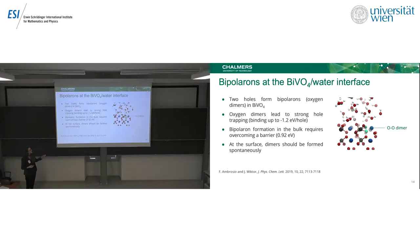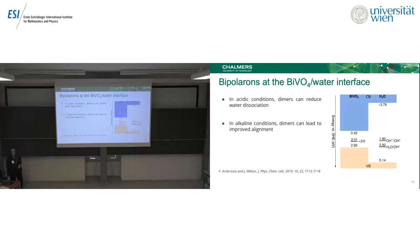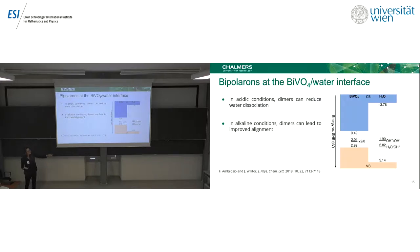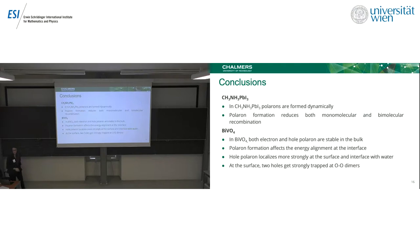There is a binding energy of up to 1.2 eV per hole for this dimer, which of course affects energy alignment at the interface. Depending on the conditions — acidic or alkaline — this affects the alignment in different ways. In acidic conditions, the hole would have to go up in energy to split water, which would probably not happen. But in alkaline conditions, the relevant redox potential brings the energies very close. That was all I wanted to tell you today.